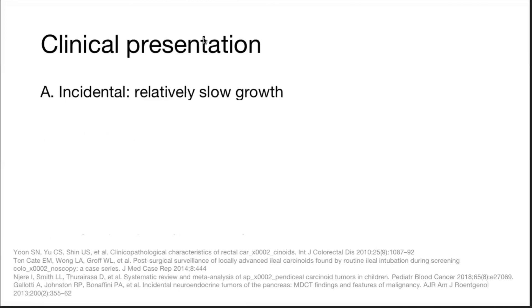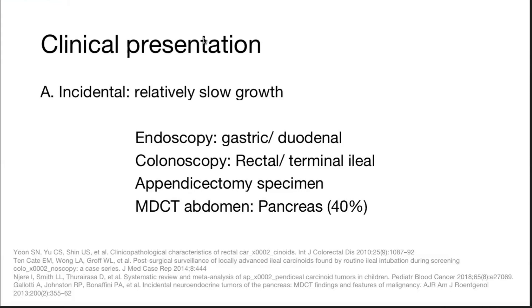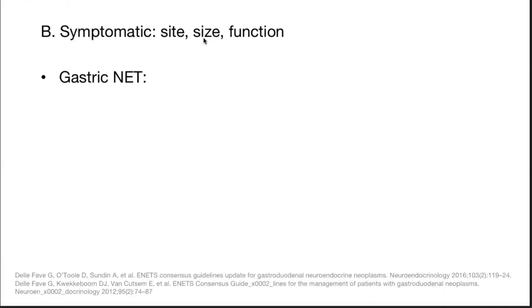Most commonly these tumors present incidentally, since they are relatively very slow-growing. Gastric and duodenal tumors generally come to picture on endoscopy; rectal and terminal ileal on colonoscopy; appendix neuroendocrine tumors most commonly are seen after an appendicectomy specimen; and obviously pancreatic on multidector CT abdomen.